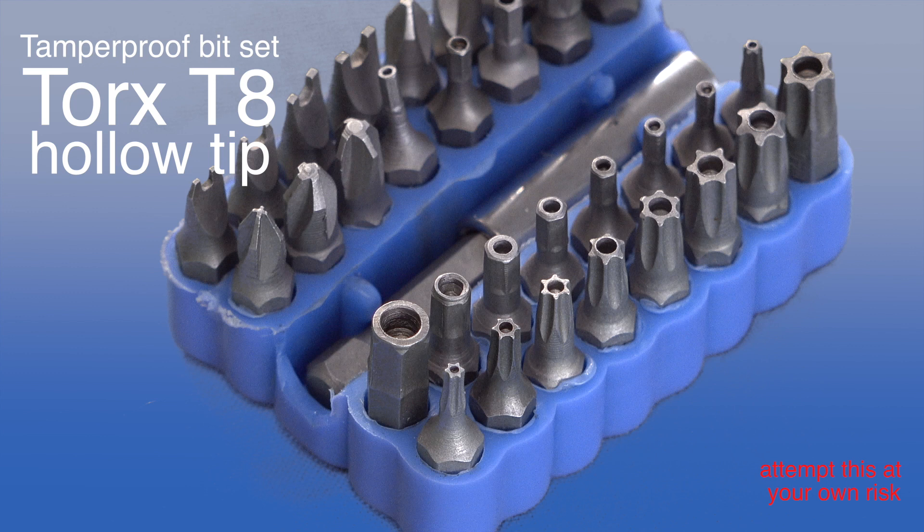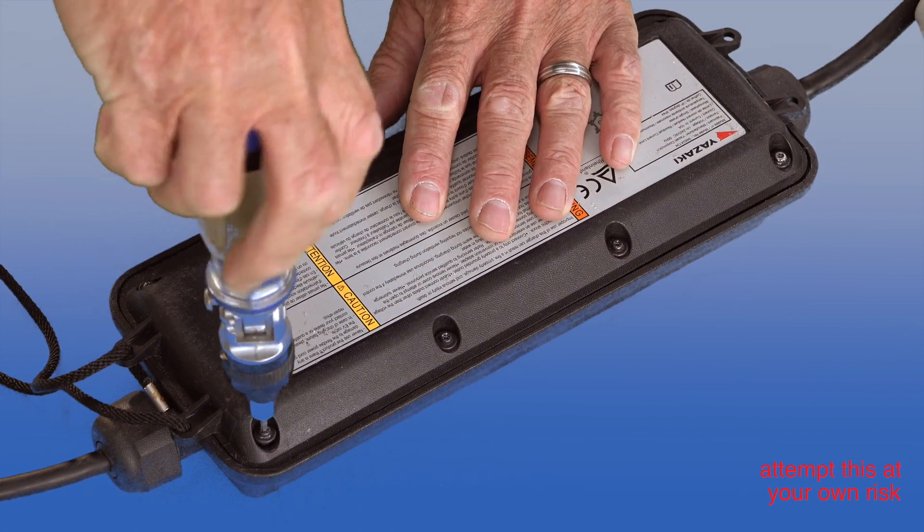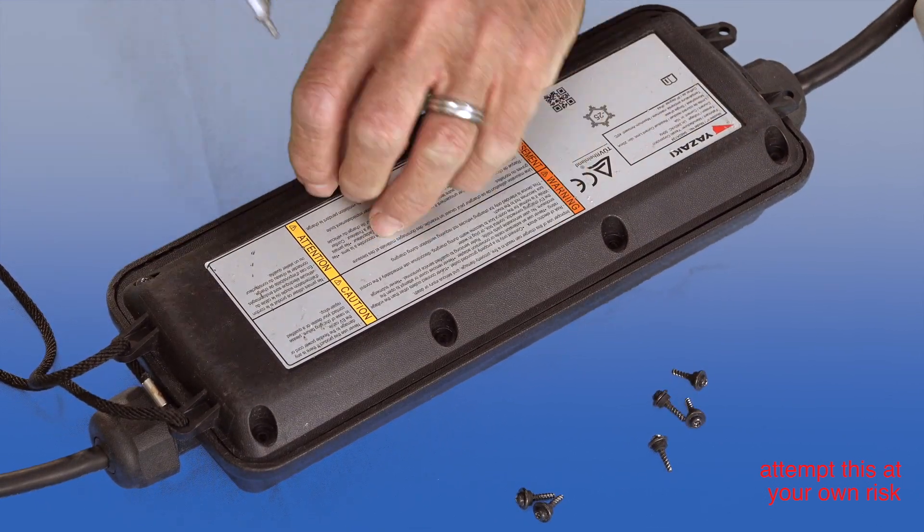So the first thing is those are tamper proof screws, so you need Torx T8 holotip bit to actually get those screws out. They're not made of particularly strong metal so take it steady. It sort of feels like they'd easily strip.